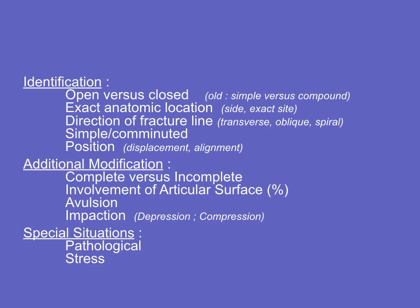There are many ways that we can describe a fracture. We can describe whether it's open or closed, whereabouts the fracture is, the geometry of the fracture, whether it's simple — i.e. in two bits — or more than two pieces, and we can describe displacements and angulations.